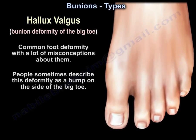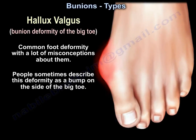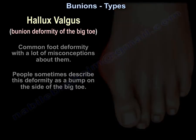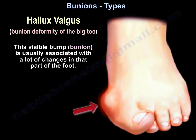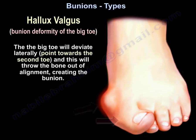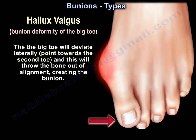Hallux valgus is a common deformity and there are a lot of misconceptions about it. People sometimes describe it as a bump on the side of the big toe. This visible bump or bunion is usually associated with a lot of changes in that part of the foot. The big toe will deviate laterally, meaning it points towards the second toe, and that will throw the bone out of alignment, creating the bunion.